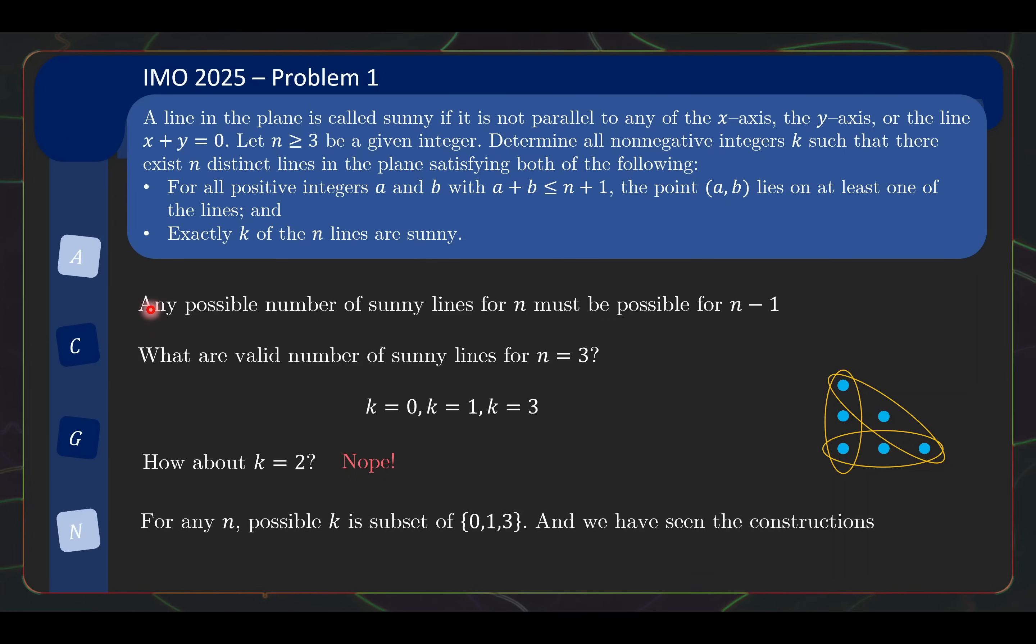So rounding back to our downward induction statement over here, we earlier saw that for any n, possible k is a subset of the possible k for n minus one all the way to the possible k for n equals three, which are 0, 1 and 3. So for any n, possible k is a subset of 0, 1, 3. But we have just saw the constructions when we are presenting the motivation earlier on, to show that k equals 0, 1 and 3 is possible for every n.